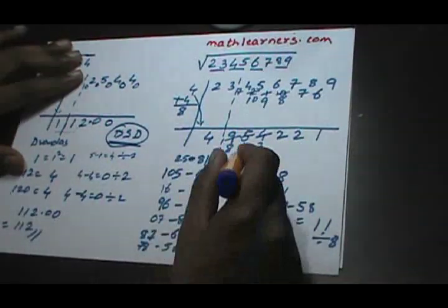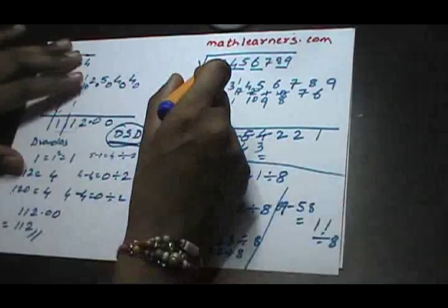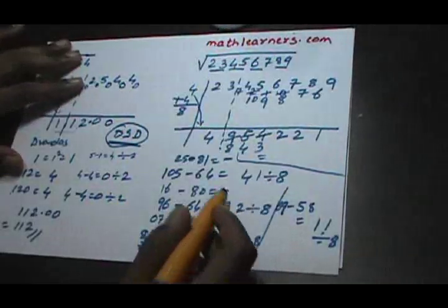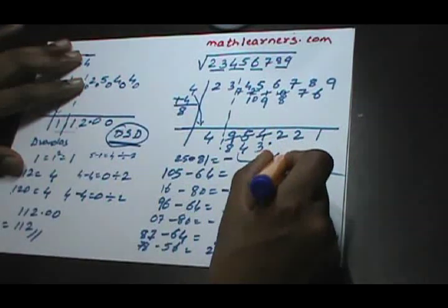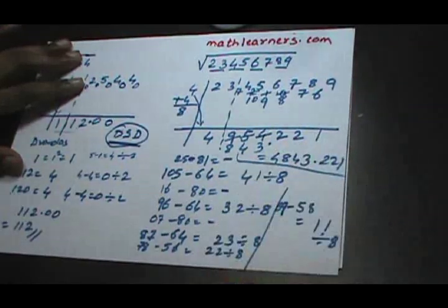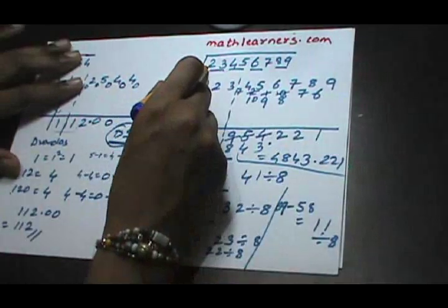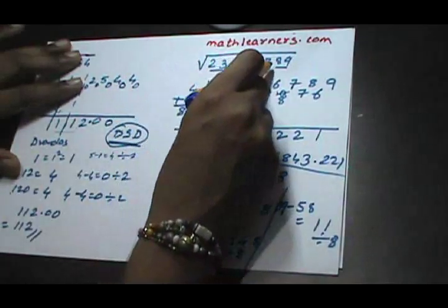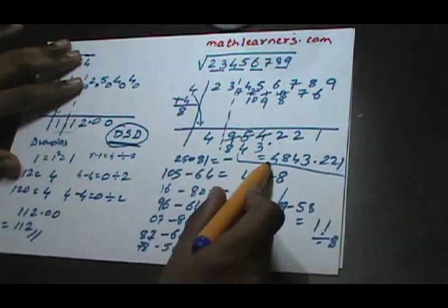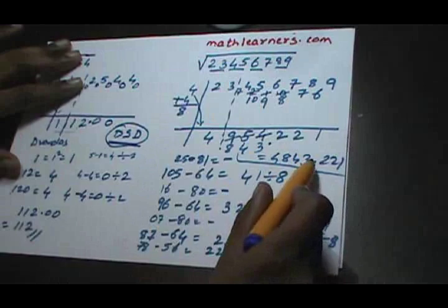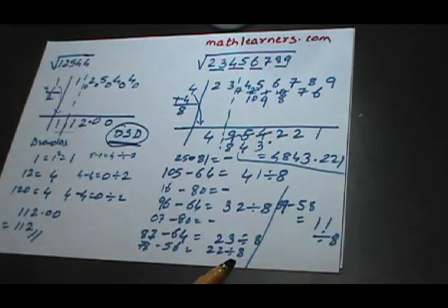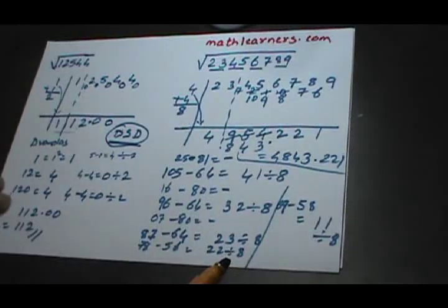We now put the decimal point. As there are 8 digits, the decimal point comes after 4 digits. So the answer is 4843.221. The number 23456789 is not a perfect square, and its square root is approximately 4843.221. You can find more examples at www.mathlearners.com. If you have questions, please feel free to ask. Thank you for watching.